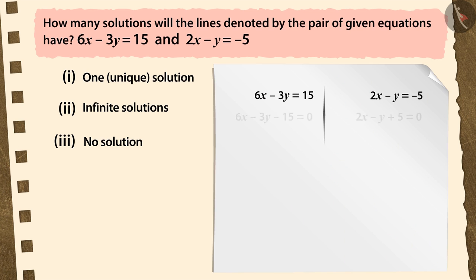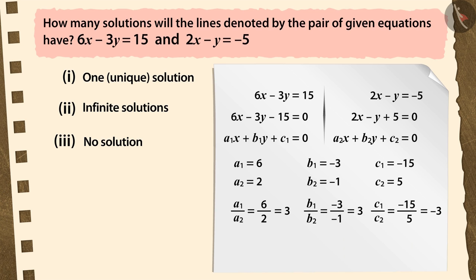Now, by comparing our equations with the general form of linear equations in two variables, you can see that a1 by a2 is equal to b1 by b2, which is not equal to c1 by c2.